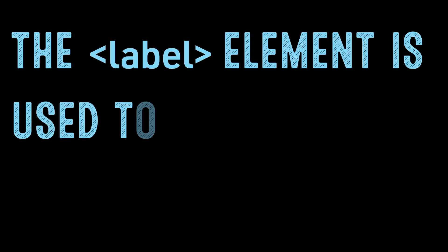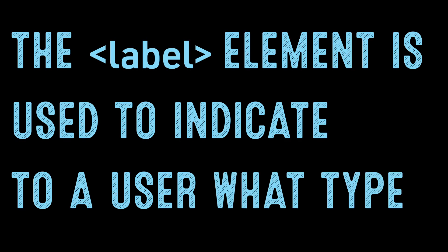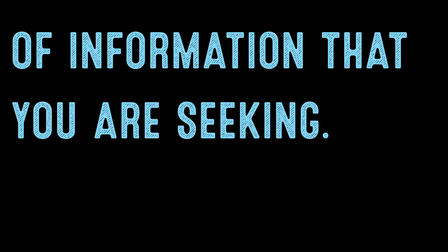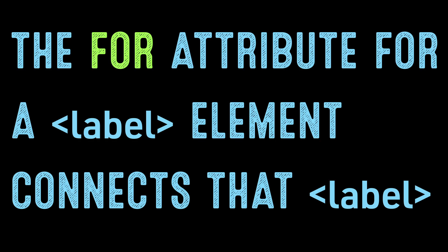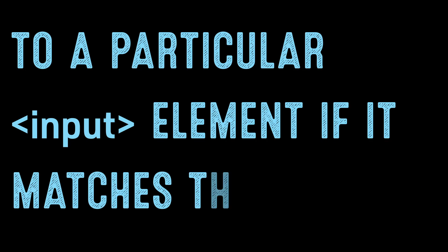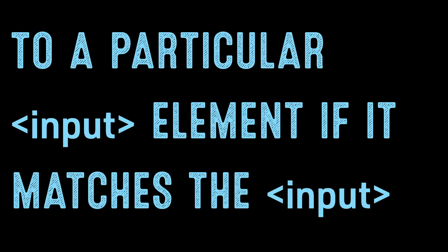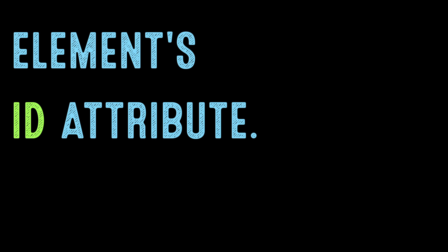The label element is used to indicate to a user what type of information you are seeking. How do we bind a label element to the input element for the user's name? The for attribute of a label element connects that label to a particular input element if it matches the input element's ID attribute.